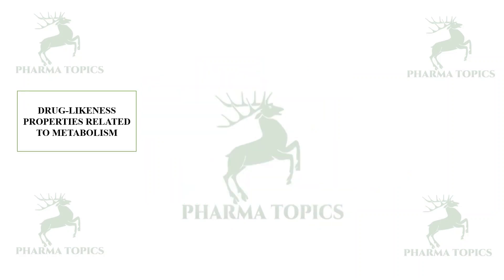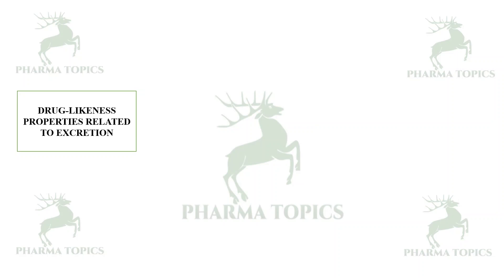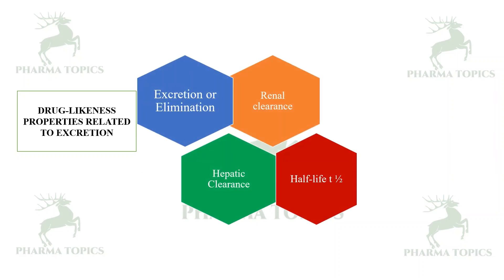Drug likeness properties related to metabolism take into account various CYP enzymes — whether the compound inhibits or acts as a substrate for CYP1A2, CYP2C9, CYP2C19, CYP2D6, and CYP3A4. For excretion, renal clearance, hepatic clearance, and biological half-life are the key features considered.